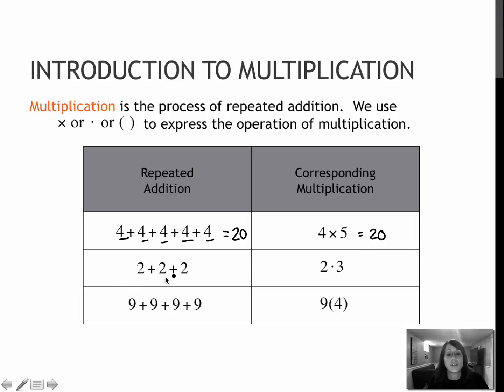Two plus two plus two—two happens three times—then my value is two times three in multiplication. Notice on the first example, I used the x to represent multiplication. You might also see it with the dot to represent multiplication.